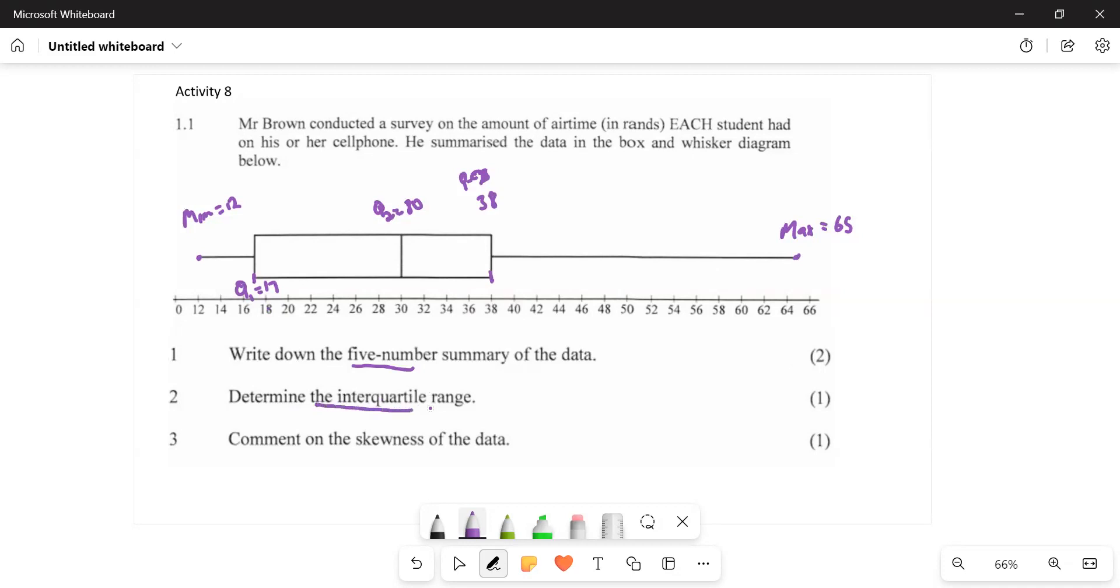Now, how do you determine the IQR, which is the interquartile range? We are supposed to say we have Q3 minus Q1. What is our Q3 then? 38 minus 17.